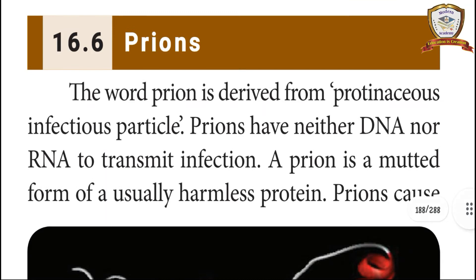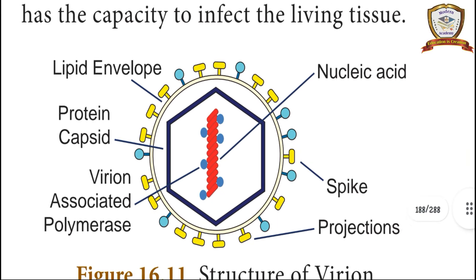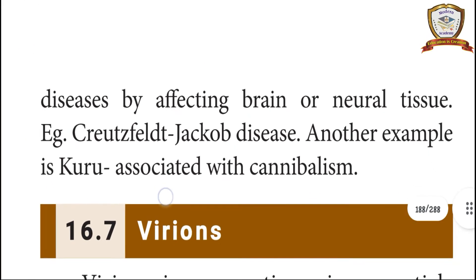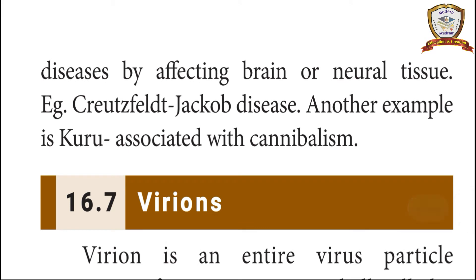Prions. The word prion is derived from 'proteinaceous infectious particle'. Prions have neither DNA nor RNA to transmit infection. A prion is a mutated form of a usually harmless protein. Prions cause diseases by affecting brain and neural tissue. Example: Creutzfeldt-Jakob disease. Another example is Kuru, associated with cannibalism.